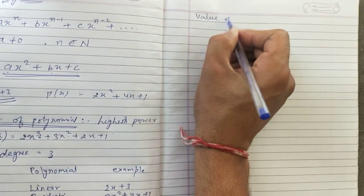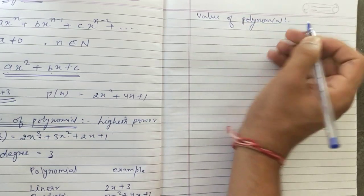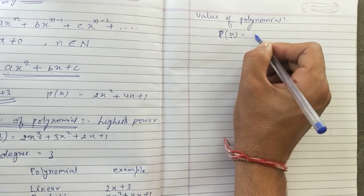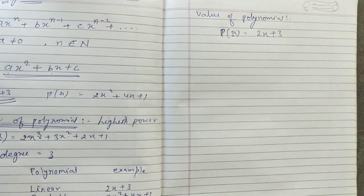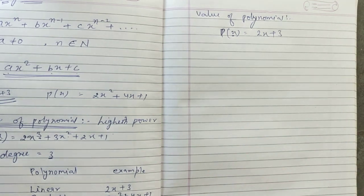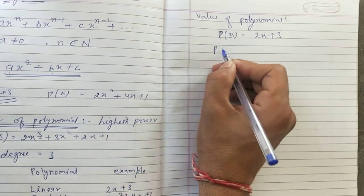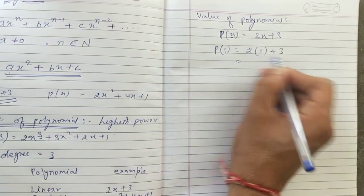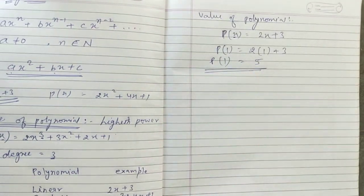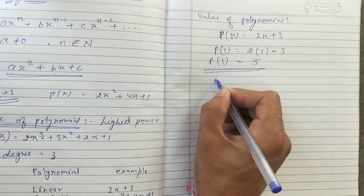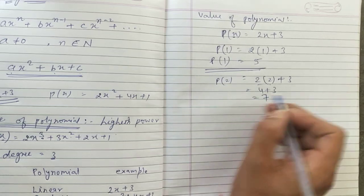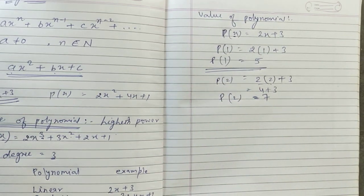Now let's find the value of a polynomial. If a polynomial in variable x is 2x + 3, we can find its value at any point. For example, at x = 1: 2(1) + 3 = 5, so the value is 5. At x = 2: 2(2) + 3 = 7, so the value is 7. This is how you find the value of a polynomial.